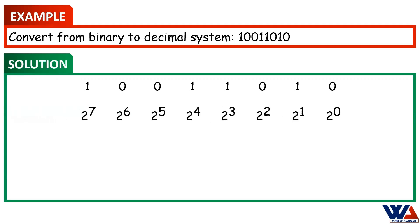In the second step, list out the powers of 2 for all the digits starting from the rightmost position. Under the first binary digit, the term would be 2 to power 0. Under the second binary digit, the term would be 2 to power 1. And as we move on, it will be 2 to power 2, 2 to power 3, 2 to power 4, and will continue until we get, in the last binary digit, 2 to power 7.